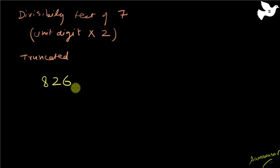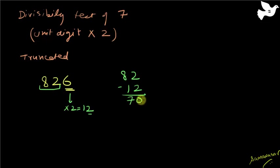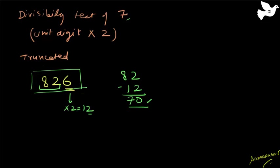Let's say I have the number 826. The unit digit is 6, so I multiply this by 2, which gives 12. My remaining number is 82, so I subtract 12 from 82 and get 70. Since 70 is divisible by 7, the number 826 is divisible by 7.